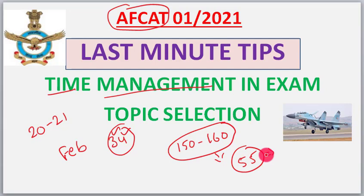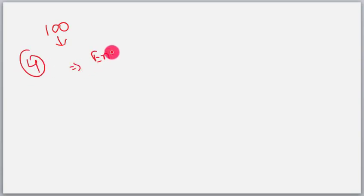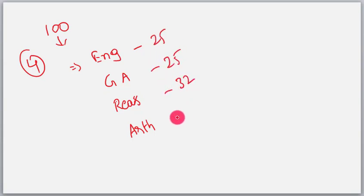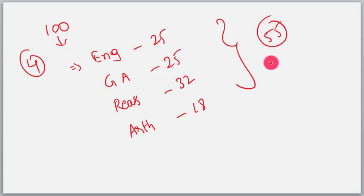We have 100 questions in this exam across four topics: English with 25 questions, General Awareness with 25, Reasoning with 32, and Arithmetic with 18. From these four topics, we need to attempt 55 short questions to clear the cutoff.